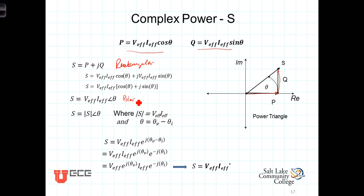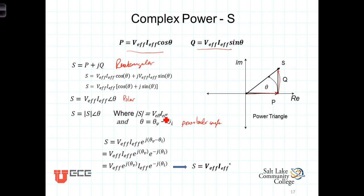This theta is theta V minus theta I — it's the power factor angle. We're also going to define the magnitude of S, this V effective I effective, and we're going to call it the apparent power.